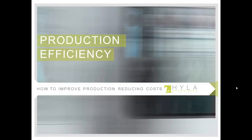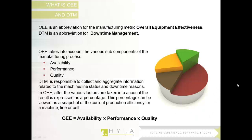Before we start getting into the demonstration, just a little background on what OEE is. The industry standard definition for OEE — Overall Equipment Effectiveness — is broken up by availability, performance, and quality. We also have a tool provided by Siemens which is downtime management, and that relates to availability to give you a more defined and detailed reason of why your machines went down.